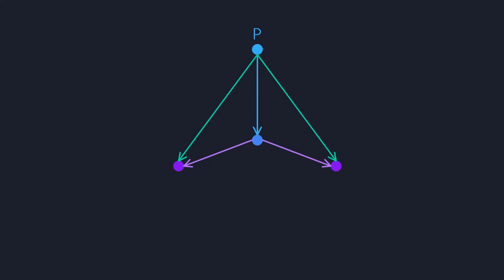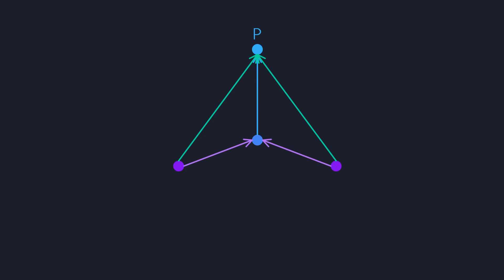Okay, do you want to see something cool? Look what happens when we reverse all the arrows. This turns the definition of the product into the definition of what is known as the co-product. It's a very common trick in category theory — just invert all the arrows and stick the word 'co' in front of your concepts. And alakazam, you get a new concept for free.